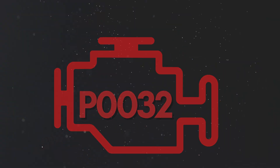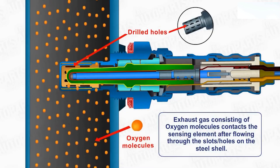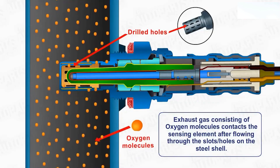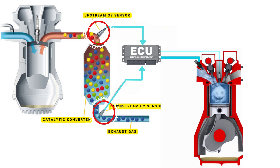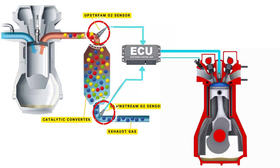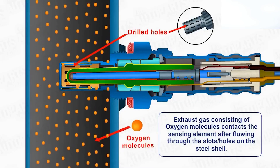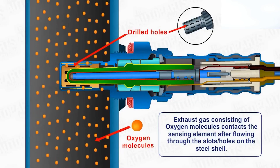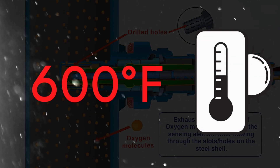Now let's learn why P0032 was triggered. Your vehicle's oxygen sensor plays a vital role in monitoring the oxygen content in the exhaust gases. It sends this data to the ECU, which then uses it to maintain the optimal air-fuel ratio. The ECU controls the air-fuel ratio by adjusting the timing of the engine's valves, allowing just the right amount of air and fuel to enter the combustion chamber. An oxygen sensor won't function correctly until it's heated to a certain temperature — around 600 degrees Fahrenheit for conventional sensors.